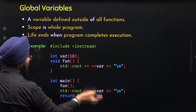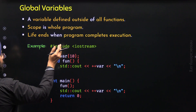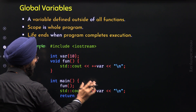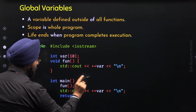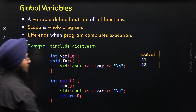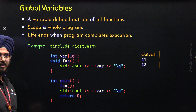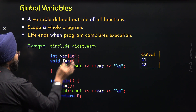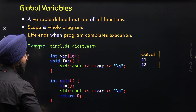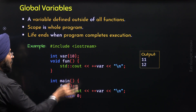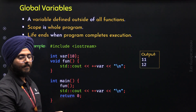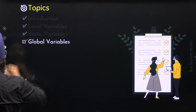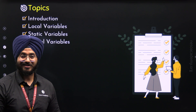Inside `main`, we can also access and increment `var`. Its current value is 11 after the function call, so `++var` gives 12, which is displayed. The output is 11 and 12. This variable has the scope and lifetime of the entire program — it is only destroyed when the program completes execution. That covers global variables and the entire lecture.